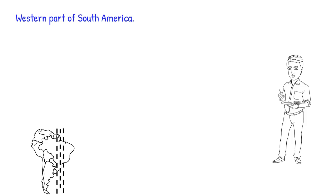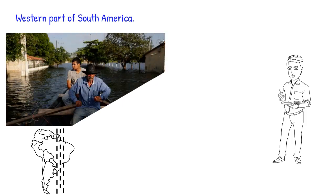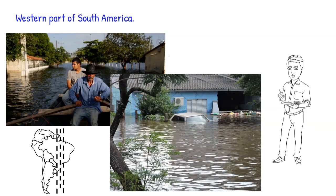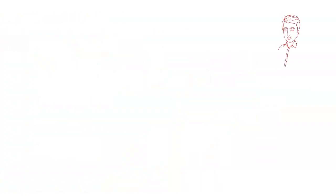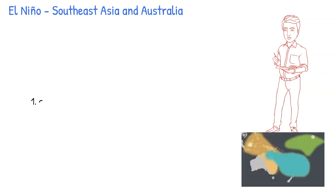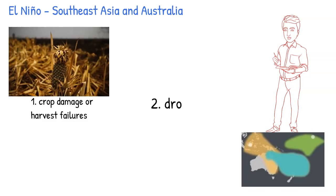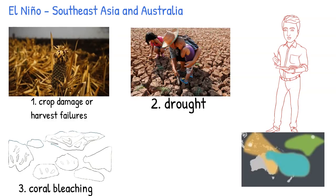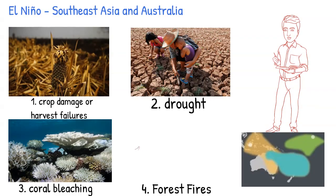Also, intense rainfall may lead to flooding in the normally dry western part of South America. In Southeast Asian countries and southeastern Australia, lesser rainfall because of El Niño can lead to crop damage or harvest failures, drought, coral bleaching, and forest fires.